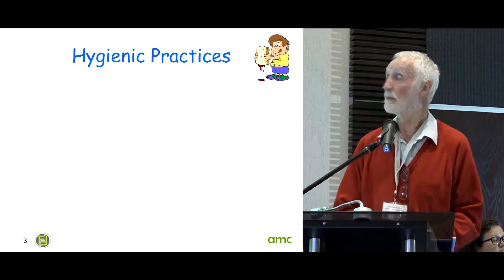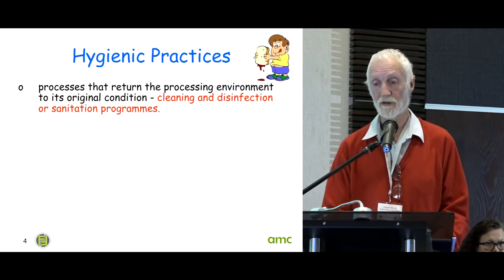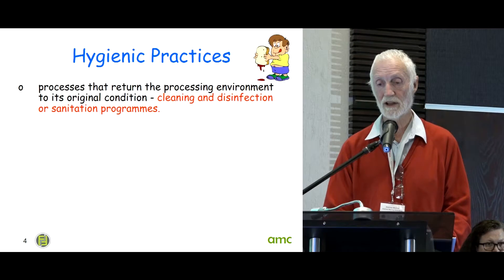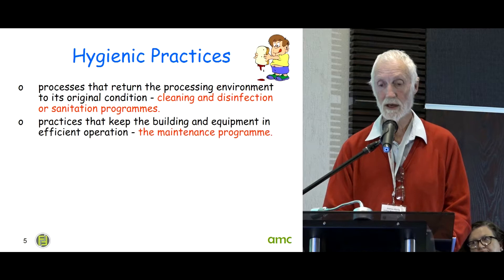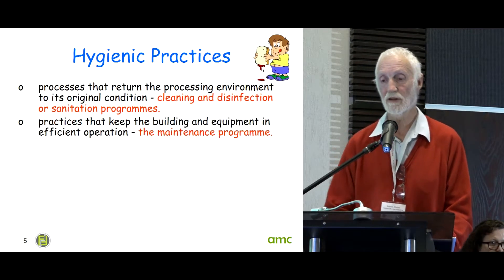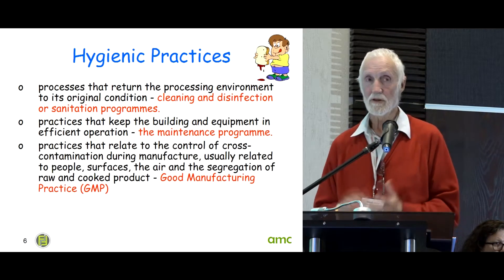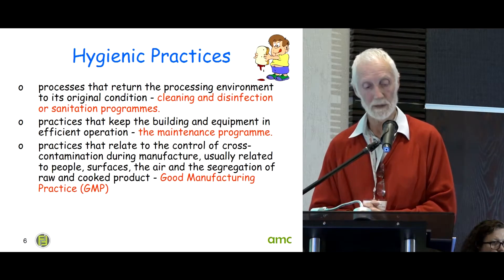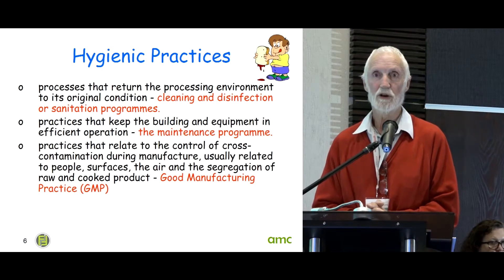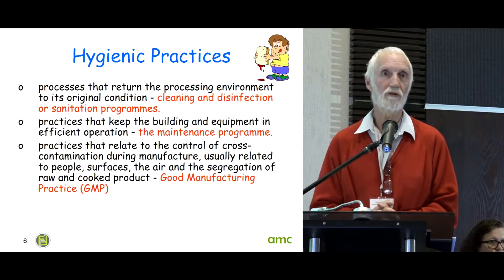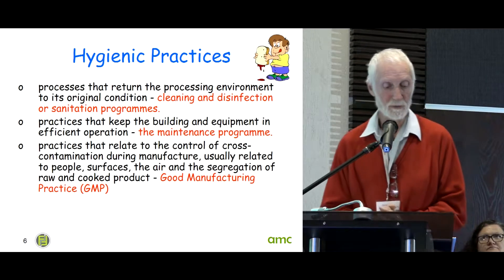How we use hygienic design depends on hygienic processes. From an engineering point of view, there are three of them: the cleaning and disinfection program, the maintenance program, and finally good manufacturing practice. Based on 14159, 10049, and the work of organizations like eHedge, we could put together what we thought was a fairly good program for safe food processing.